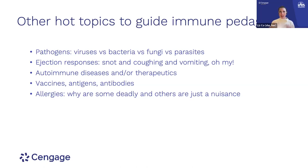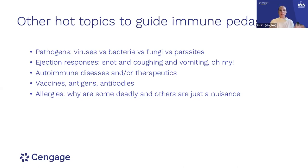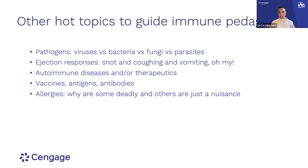Ejection responses are really interesting, depending on your students. Like, what is snot? Why does that happen and it's gross? Coughing, vomiting, and diarrhea are all ejection responses — ways of clearing out whatever has invaded us. Ejection responses are a great opportunity to do review: talking about snot lets you discuss the olfactory epithelium, mucosa, and mucus glands; coughing lets you discuss the muscles involved and accessory muscles of respiration; vomiting lets you discuss parts of the GI tract and the abdominal muscles, which are the actual drivers of vomiting; diarrhea lets you discuss peristalsis. The immune system can be a giant A&P review.